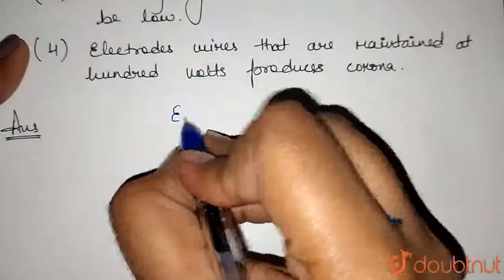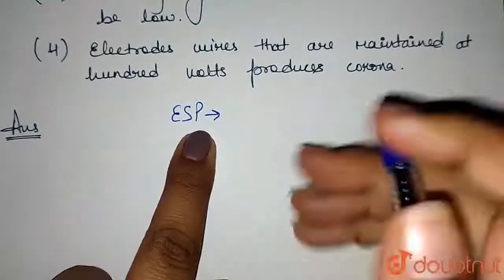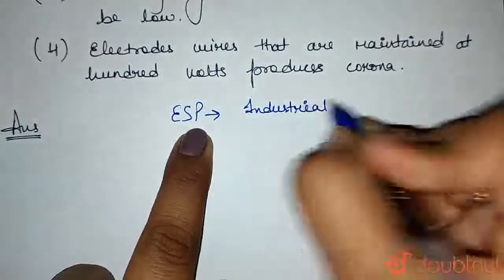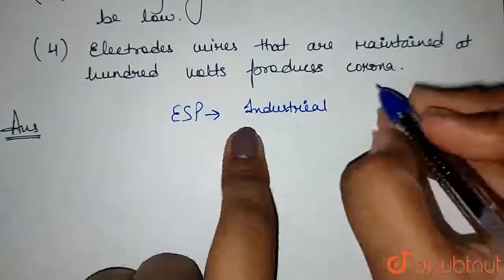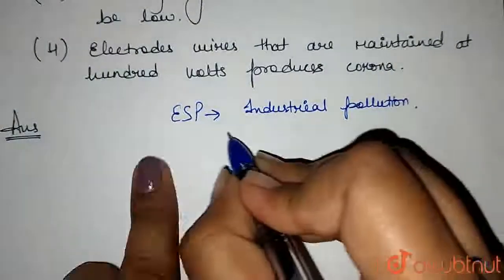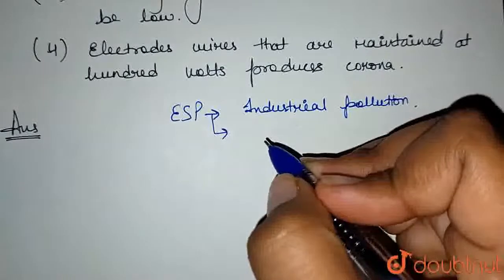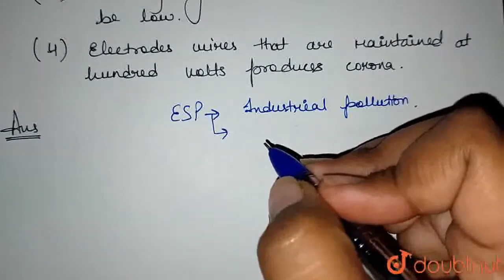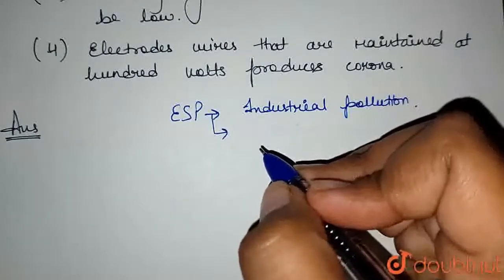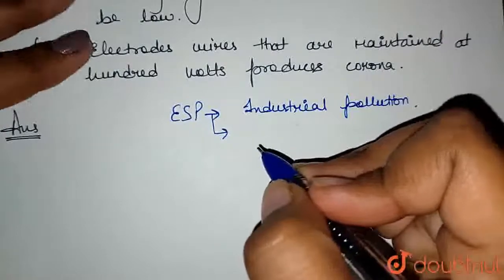ESP stands for electrostatic precipitator. We use electrostatic precipitators because of industrial pollution. Industrial pollution is very harmful for all organisms. In this case, you have harmful gases and particulate matter which irritates our nose and causes breathing problems for humans and animals. So it becomes necessary to reduce industrial pollution, which is why electrostatic precipitators are used.